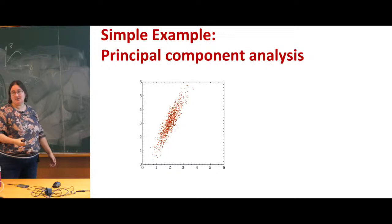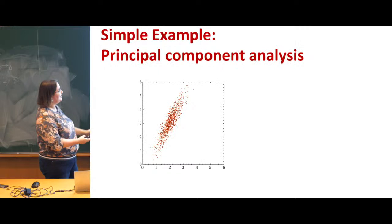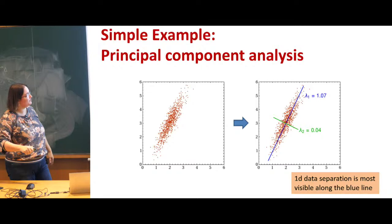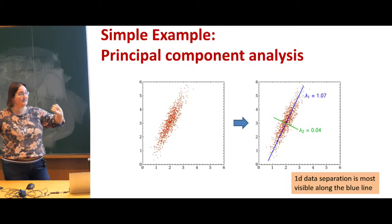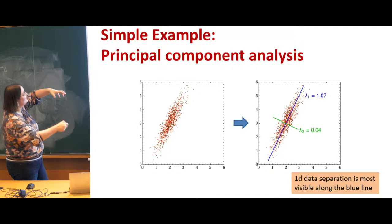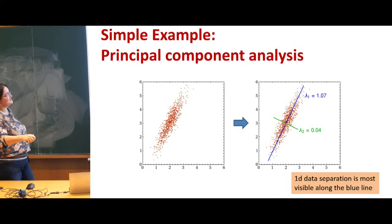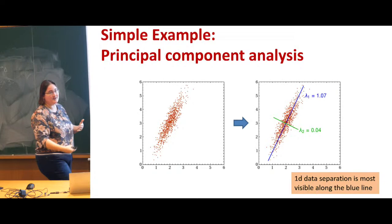What does dimensionality reduction mean? Here's a simple example: I have data in two dimensions, and most of the scatter is along one axis. One could say most of the important information is along this axis, and there's some information along the other. I could reduce the dimensionality from 2D to 1D by focusing on this one line. Taking a linear transformation, rotating the coordinate axes until the main deviations are along the first principal component and the second — that's basically principal component analysis. Every dimension adds less and less information and we reduce dimensionality.